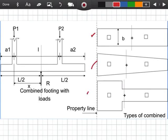The geometric proportions and shape are so fixed that the centroid of the footing area coincides with the resultant of the column loads. The resultant of the column loads coincides with the centroid of the footing.